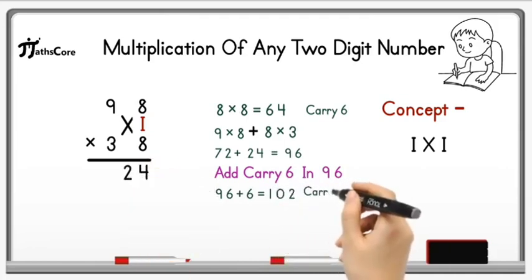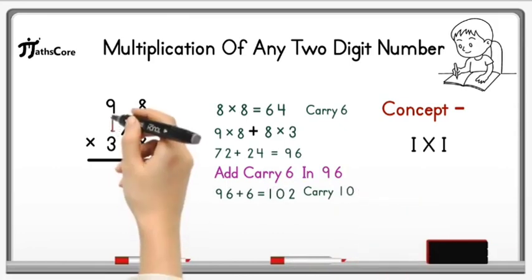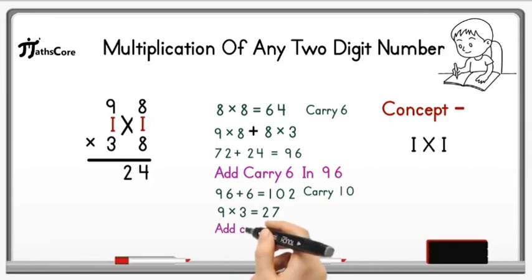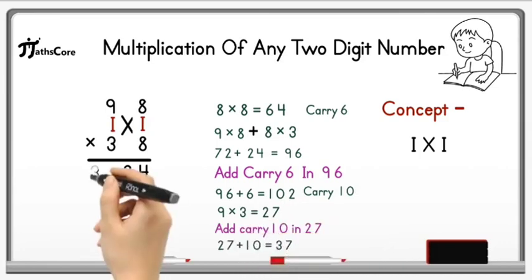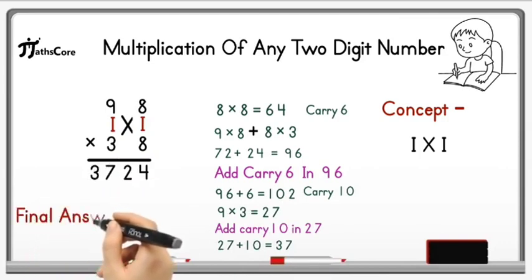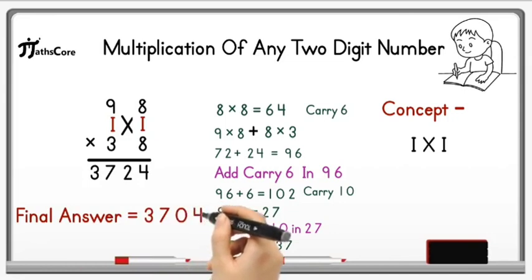After that we have to multiply tens place digit together. 9 × 3 is equal to 27, and add this carry 10 in 27. So 27 plus 10 is equal to 37. Write down this 37 before 24. So it is the final answer, 3724. You got this answer within one step.